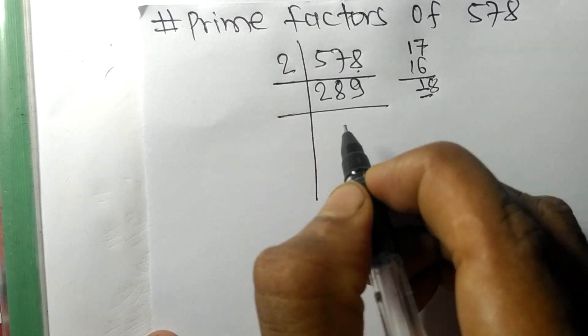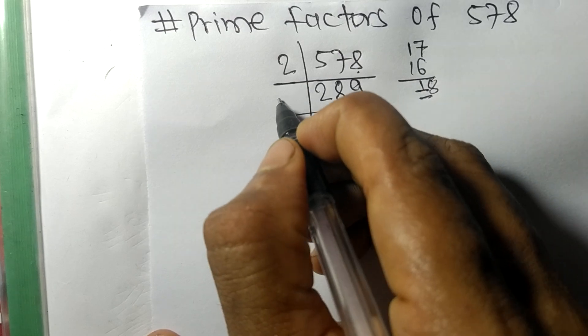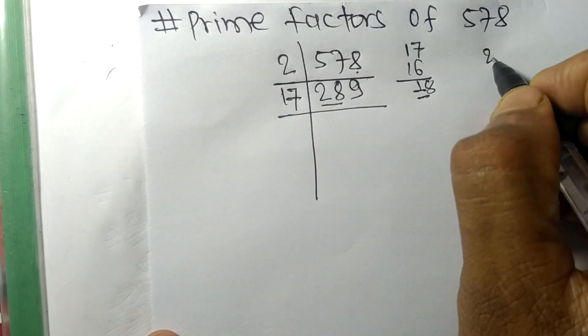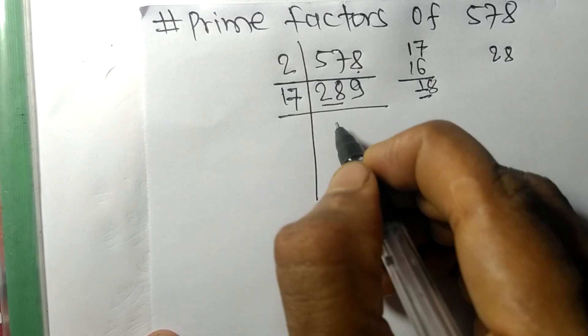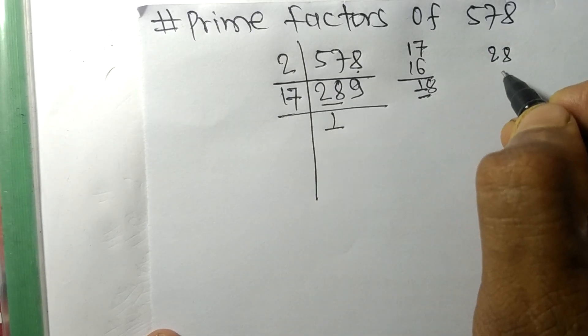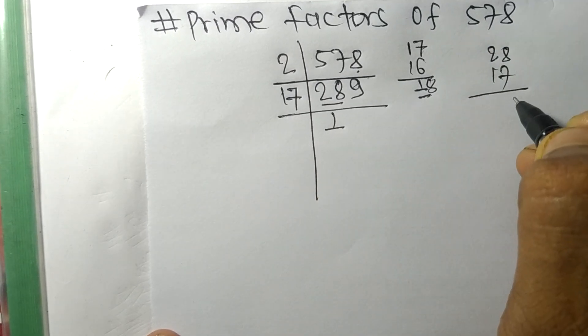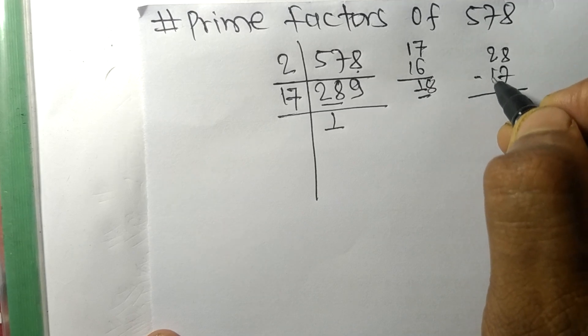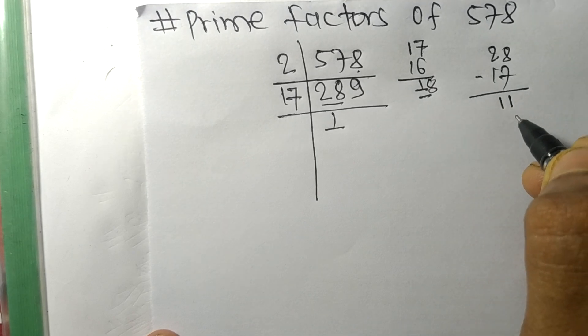So here is 28. 17 times 1 means 17, and we get here 8 minus 7 equals 1, 2 minus 1 equals 1. So now we got 11 remainder.